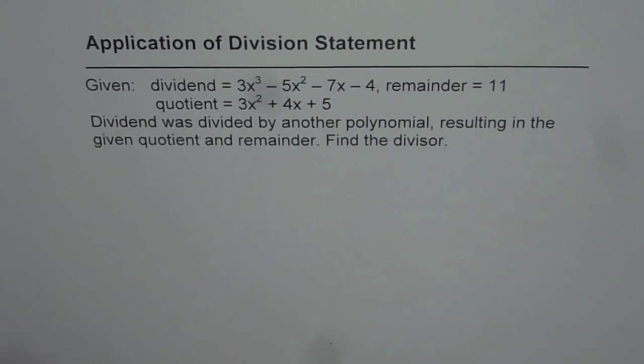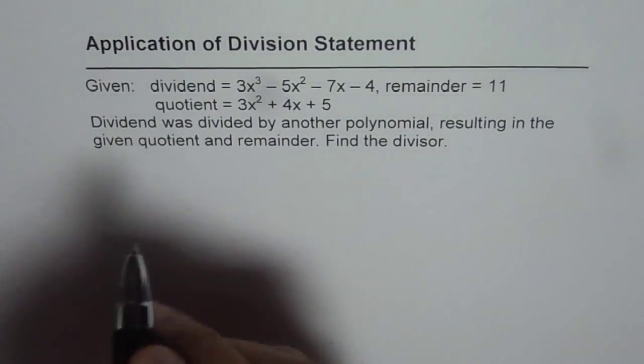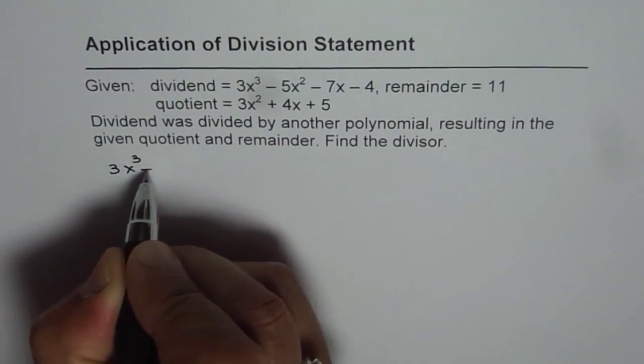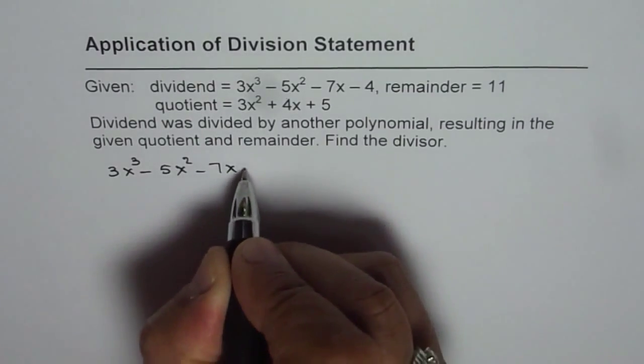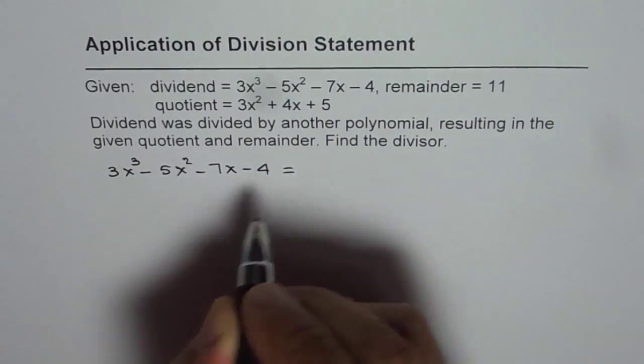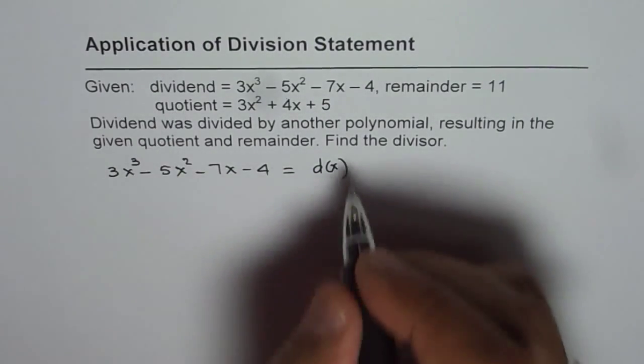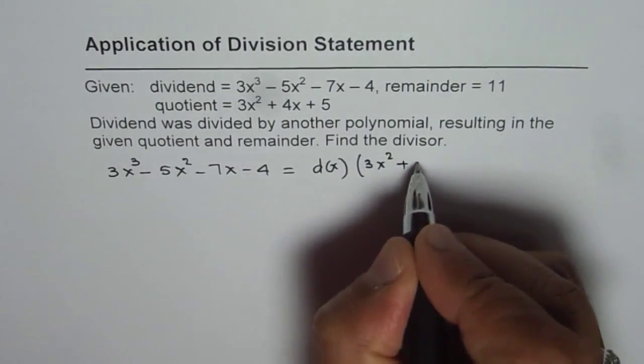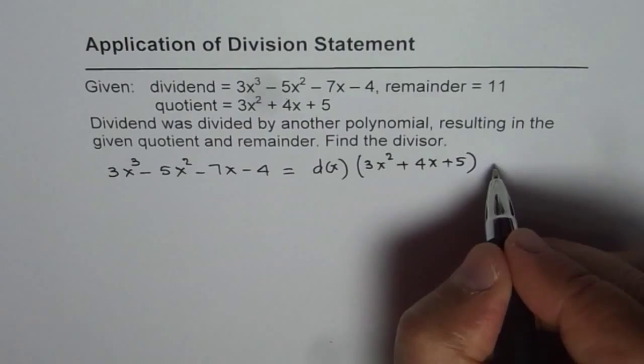I will prefer to write it first in the multiplication form. That is to say that the dividend here which is 3x cube minus 5x square minus 7x minus 4 equals divisor, which we want to find, let it be d of x, times the quotient which is 3x square plus 4x plus 5 plus the remainder.